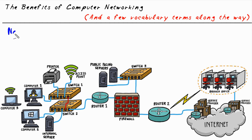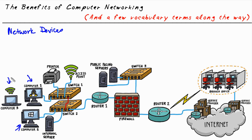Some of the common things we're going to have on networks include network devices. Network devices can include computers like computer one, computer two, and computer three. They can include servers connected to the network, printers, and mobile devices like iOS and Android devices.